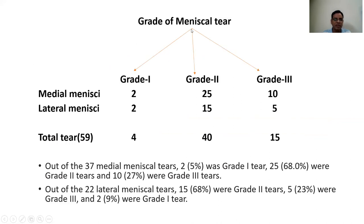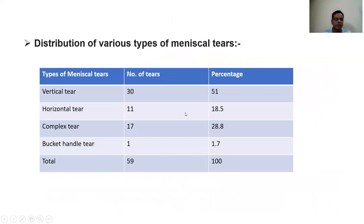Grading of meniscal tears: 4 were grade 1 tears, 40 were grade 2 tears, and 15 were grade 3 tears. Grade 2 tears were the most common finding. Distribution of various types of meniscal tears: vertical tears in 30 cases, horizontal in 11, complex tear in 17, and bucket-handle tear in 1.